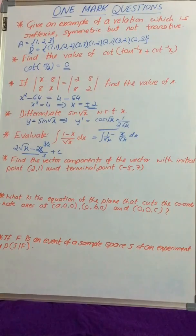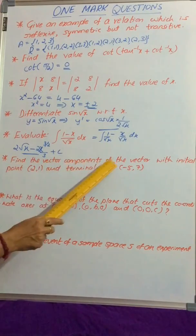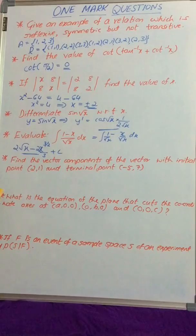Now move on to the next question. Find the vector components of the vector with initial point (2,1) and terminal point (-5,7).